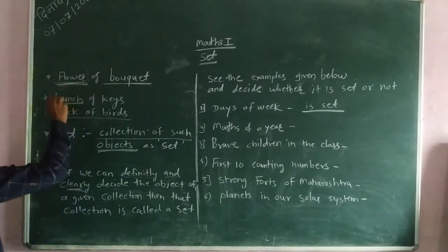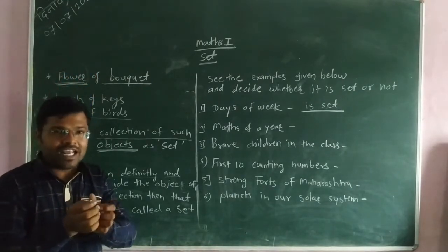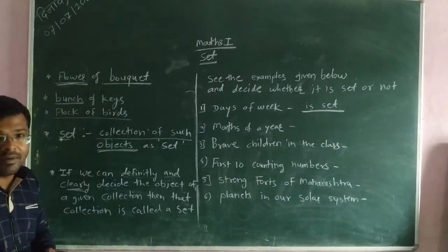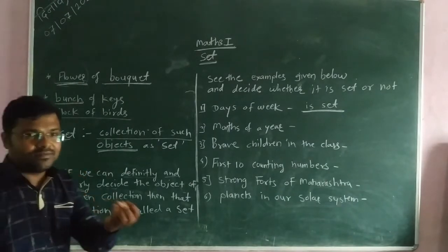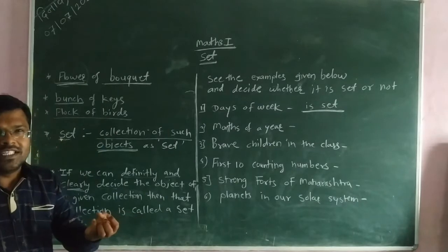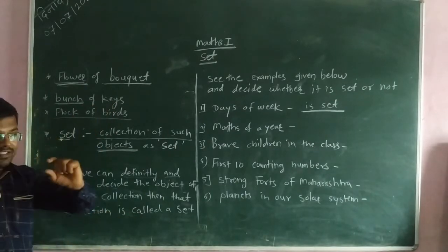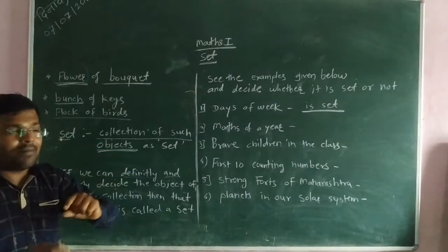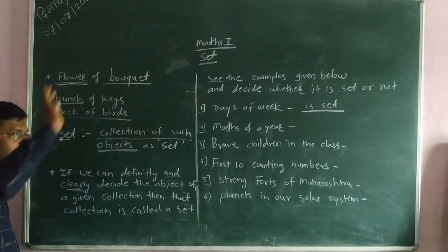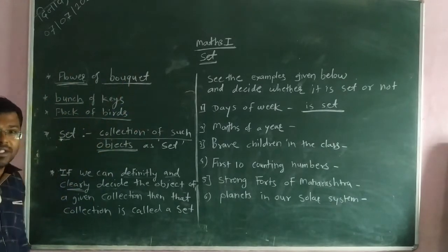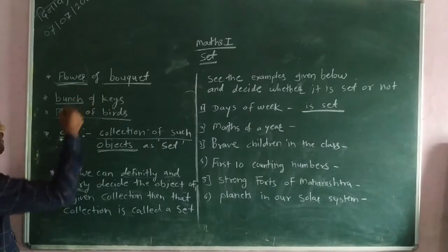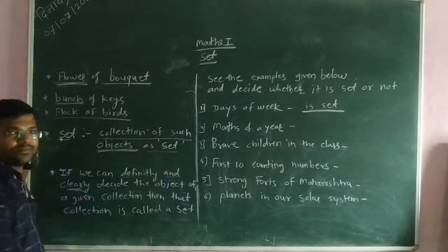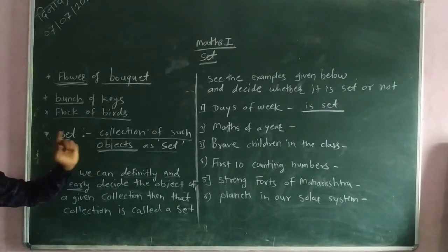Some flowers — if in their hand there are some flowers, what do you mean by flowers? Then what do you mean by a bouquet? What do you mean by a bunch of keys? Bundle of words — another one is bundle, burst. So that is called a set. Set means the collection of such objects. Collection of such objects — that means the set.